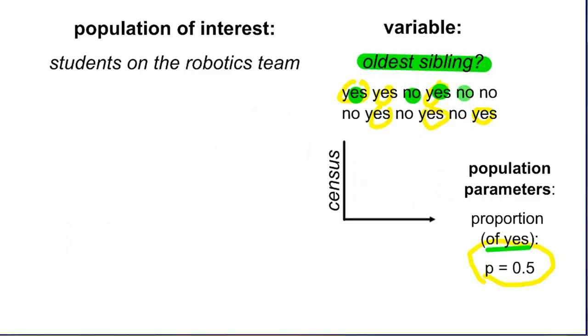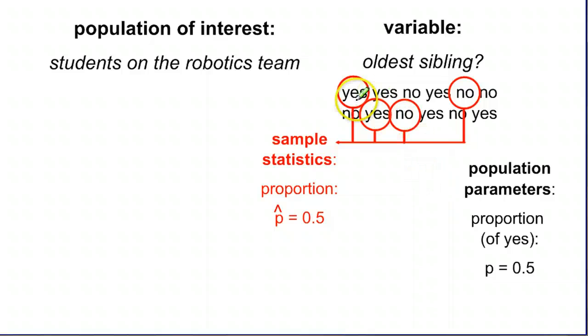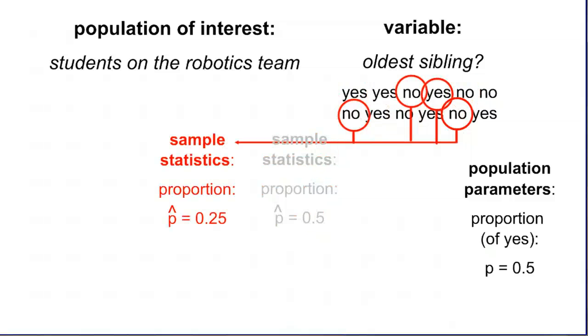Let's take a sample just like we did before. Let's randomly choose four of those answers. We might get a yes, a yes, a no, and a no. Well, that proportion is 0.5. Two out of four, 0.5. Just like we had with the whole population. So in this case, our sample worked out great.